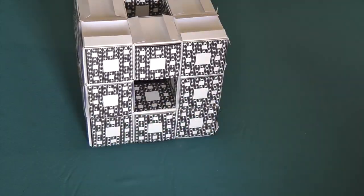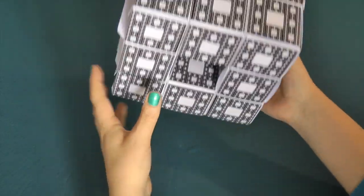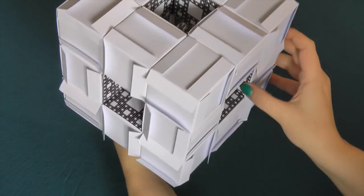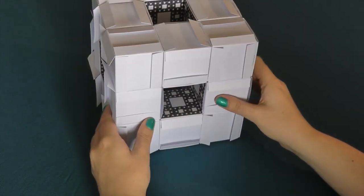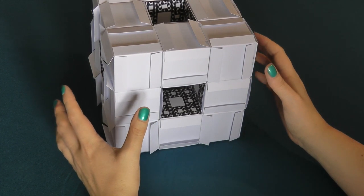This cube is now covered on three faces. The three faces that are covered are around a corner. This means that if it were to be built into a larger level 2 sponge, it could sit in one of the corner positions.